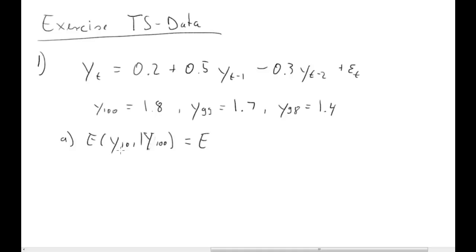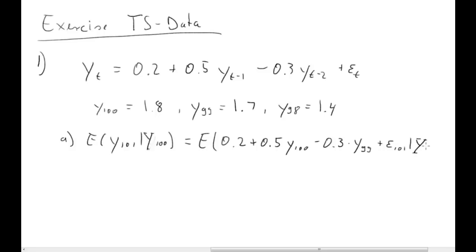We'll start straightforward. We replace y(101) with our process written down for time 101. That's 0.2 plus 0.5 times y(100) minus 0.3 times y(99) — that is, 2 lags relative to 101 is 99 — plus the error term at time 101.